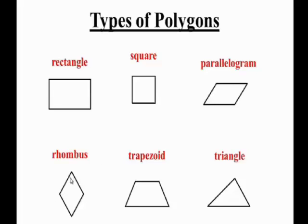We have a rhombus. It looks like a diamond. We have a trapezoid. And we have a triangle.